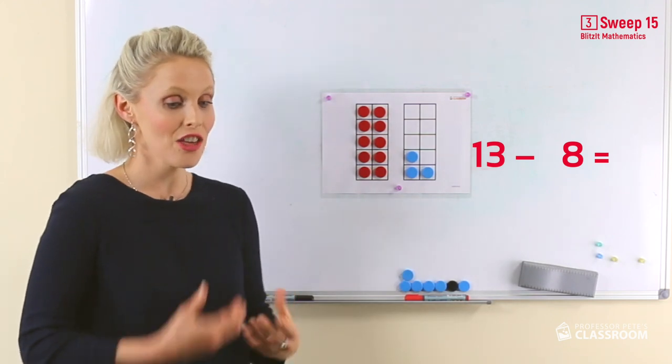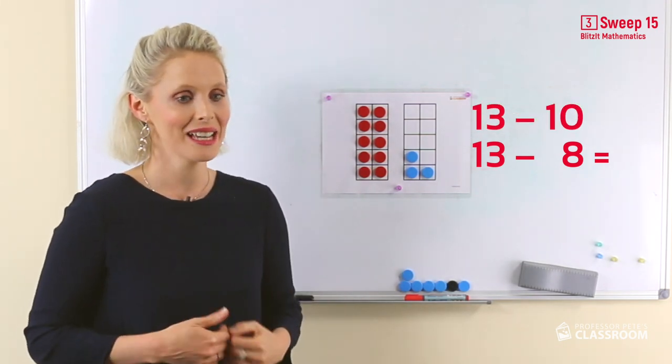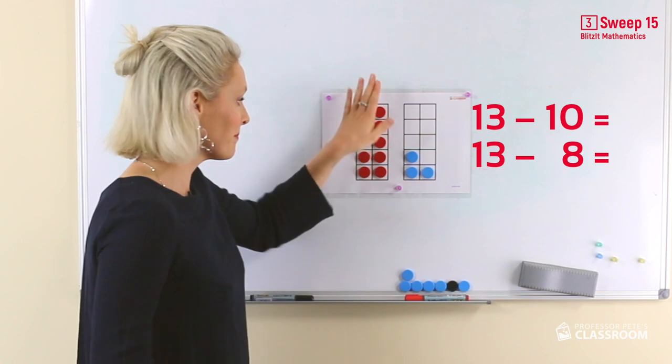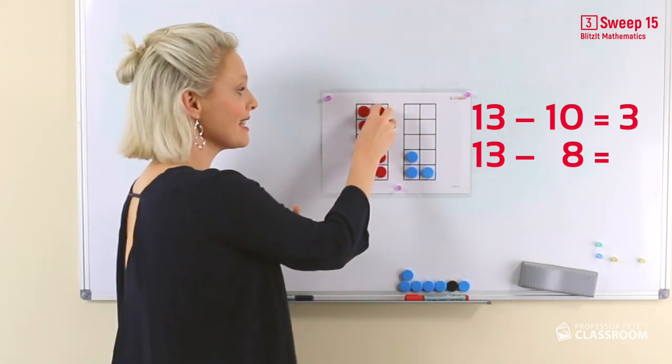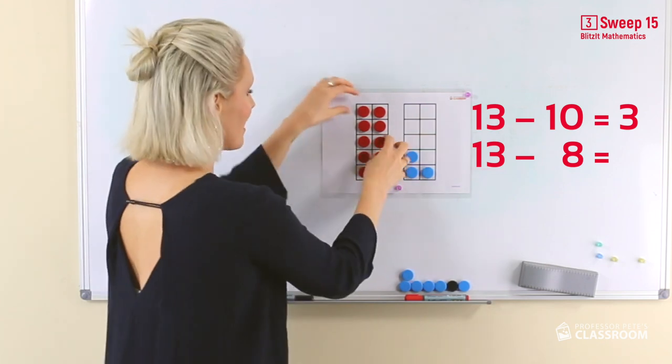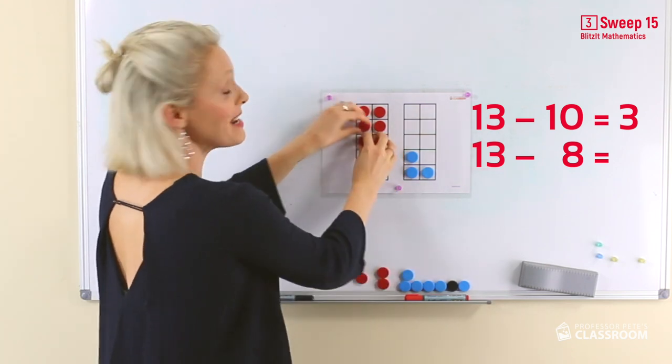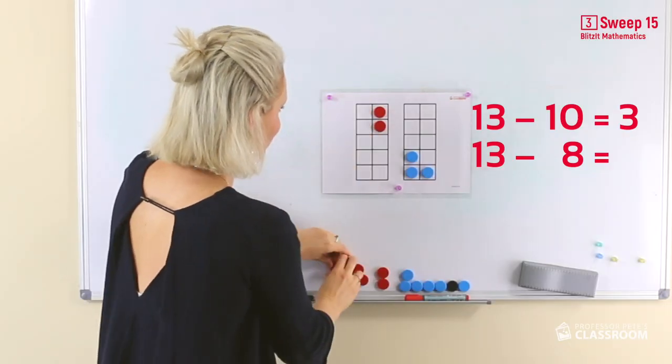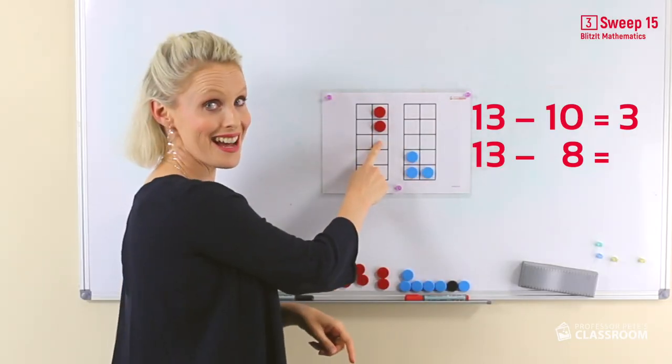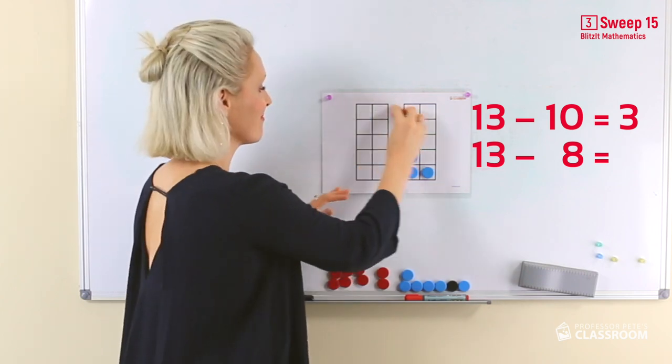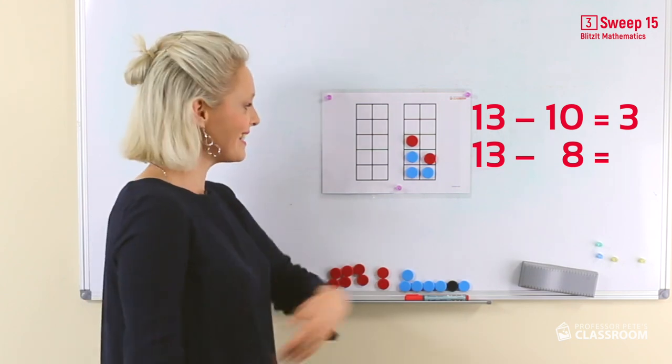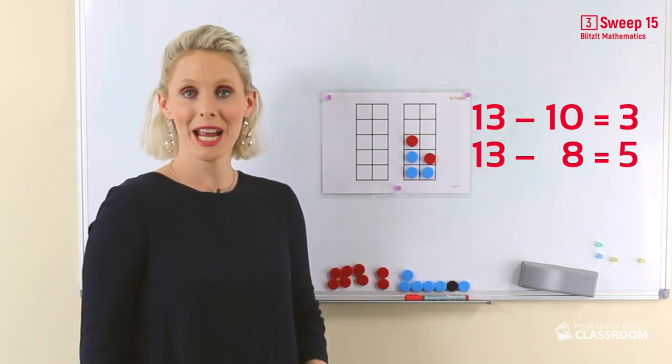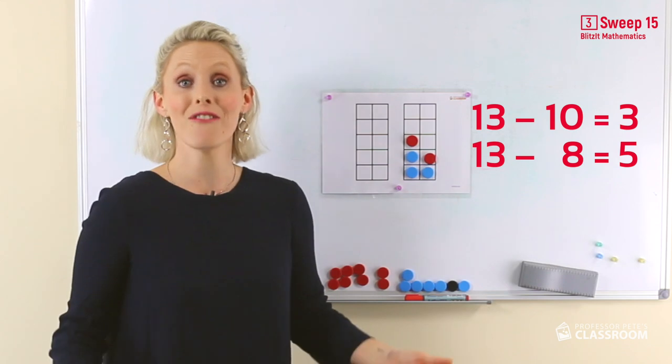So let's use that knowledge today. Here we have 13 take away 8. Now we know that if we did 13 take away 10 it would equal 3. But 8 is two less than 10. So we need to remember that we just don't want to take away 10. Here they are two less. What's the answer? It is 5. 13 take away 8 equals 5.